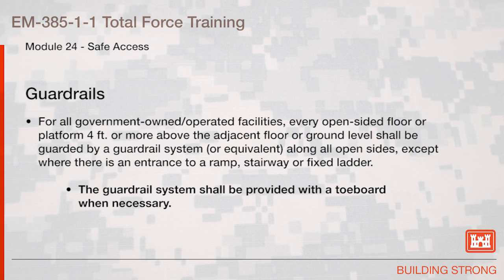Guardrails: For all government-owned or operated facilities, every open-sided floor or platform four feet or more above adjacent floor or ground level shall be guarded by a guardrail system, or equivalent, along all open sides, except where there is an entrance to a ramp, stairway, or fixed ladders. The guardrail system shall be provided with a toe board when necessary.